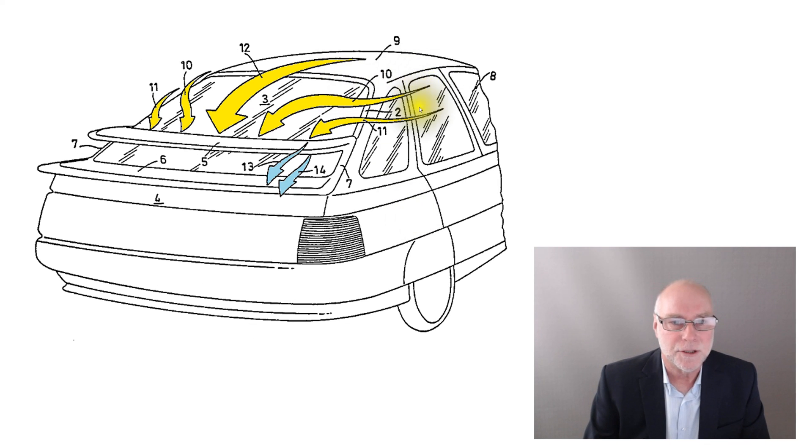So here we have yellow arrows. These show attached flow. You must have attached flow for the system to work. Attached flow that comes down the side of the car, wraps around and then passes down the rear glass. Attached flow that comes from the top of the roof and again transitions down onto the rear glass.